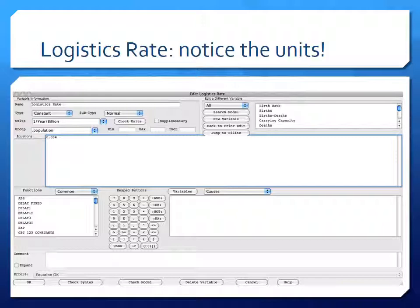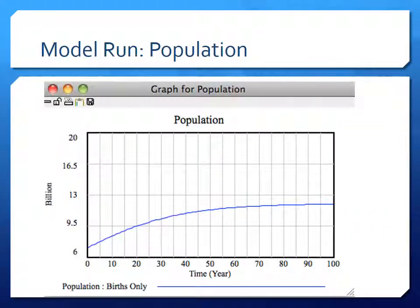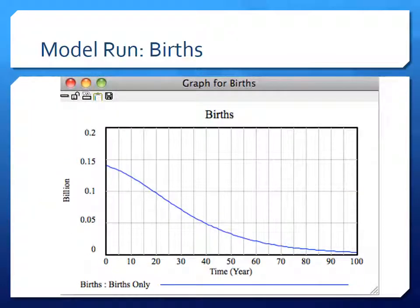The value of 0.004 for the logistics rate is used to match the current birth rate. Running the model: population starts at seven billion and grows steadily, reaching a plateau of roughly 12 billion — the carrying capacity. So population grows to its limiting value over time. Looking at births, the initial value today matches actual data: roughly 140 million people added per year over the last two to three years.